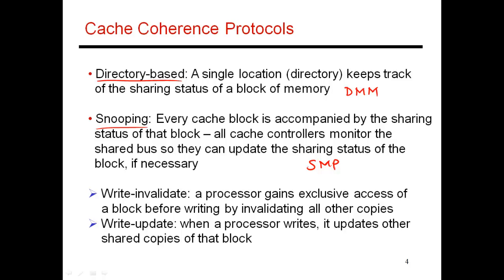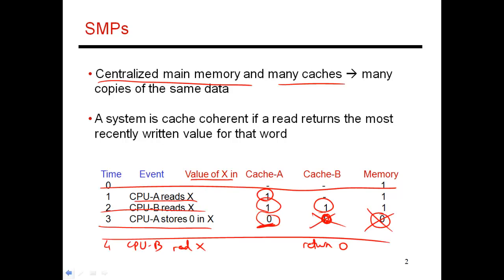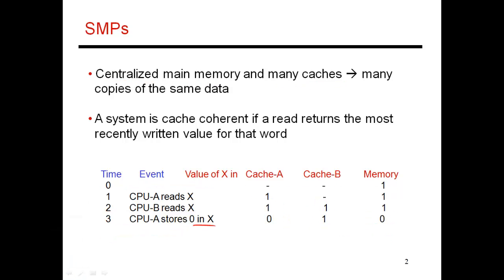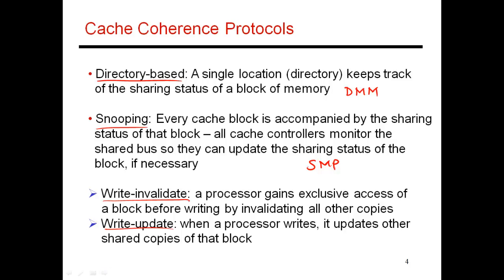You can also classify cache coherence protocols based on whether they do write invalidation or write update. This is something I just introduced where I said that when I do a write to x, if this value of x is being propagated to everyone else, so if I update the copy in B as being 0 and the copy in memory as being 0, then this is a write update policy. Instead, when I do the same write into x, if this value remains 0 and this value gets invalidated, saying that this cache copy is no longer correct, and likewise the copy in memory also gets invalidated, then that is a write invalidate policy. These are the two main kinds of policies you could use when handling writes.